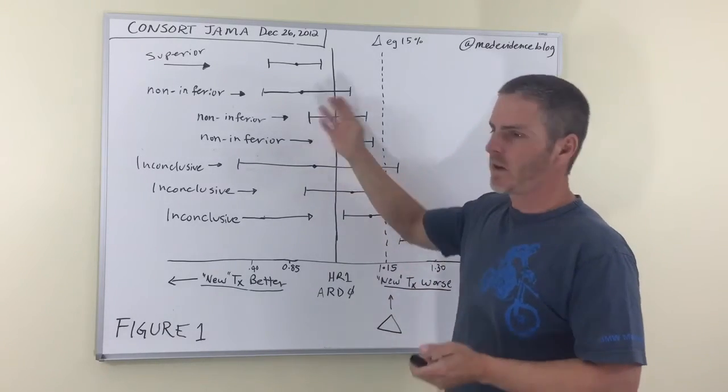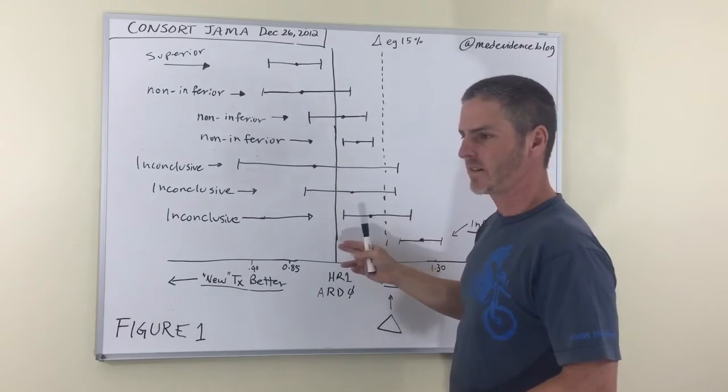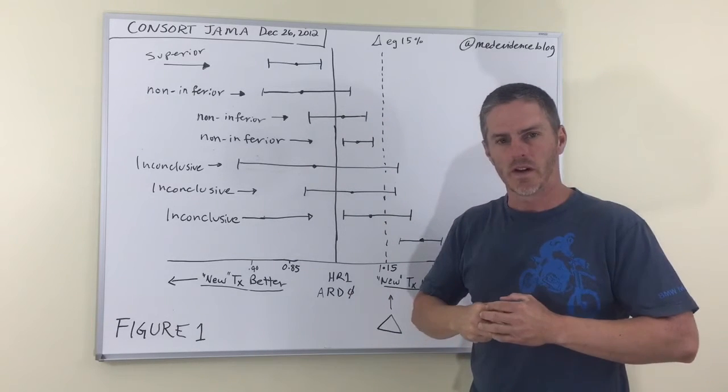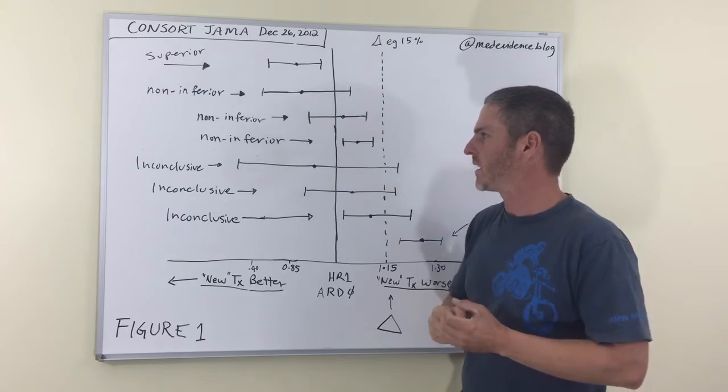They then also say that if your point estimate is in the same spot, but your confidence interval is wider, so there's not a statistically significant difference, it crosses a hazard ratio of one, then you can call your treatment non-inferior. I also don't have much of a complaint about that conclusion.